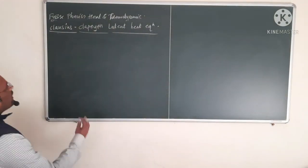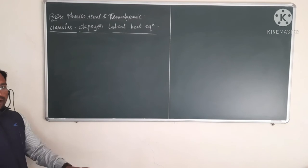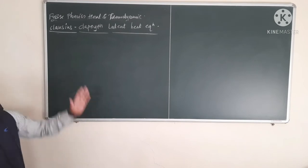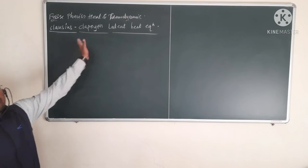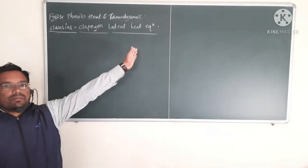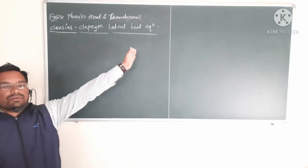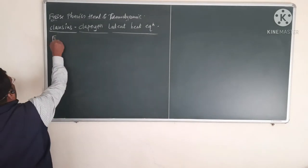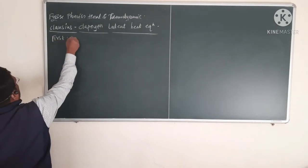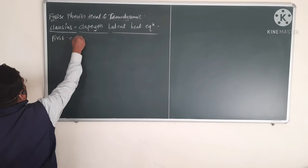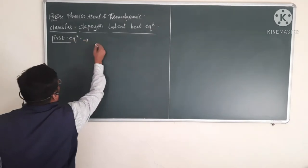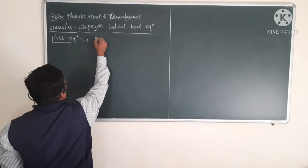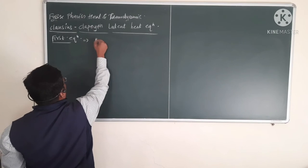We have two latent heat equations: the first Clausius-Clapeyron latent heat equation and the second Clausius-Clapeyron latent heat equation. We are going to study the first latent heat equation, which is applicable for a substance undergoing a first-order change.